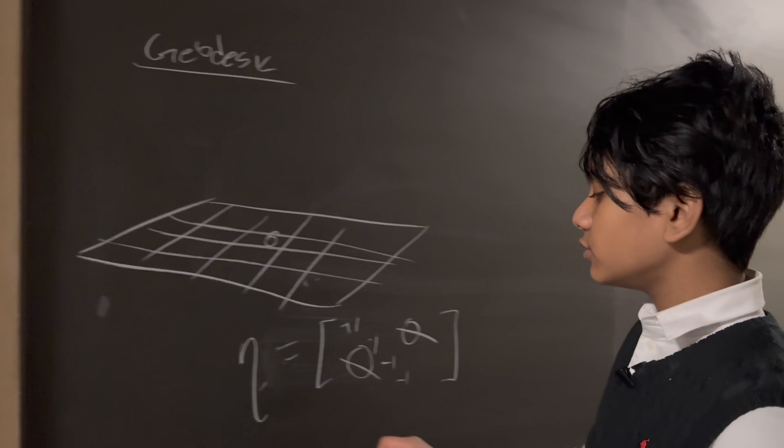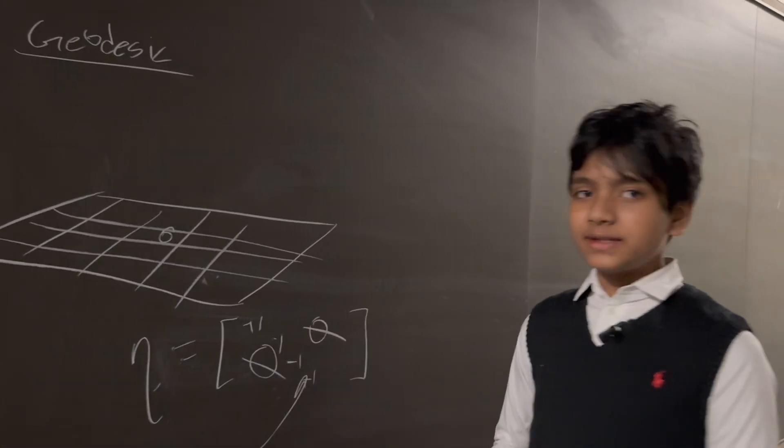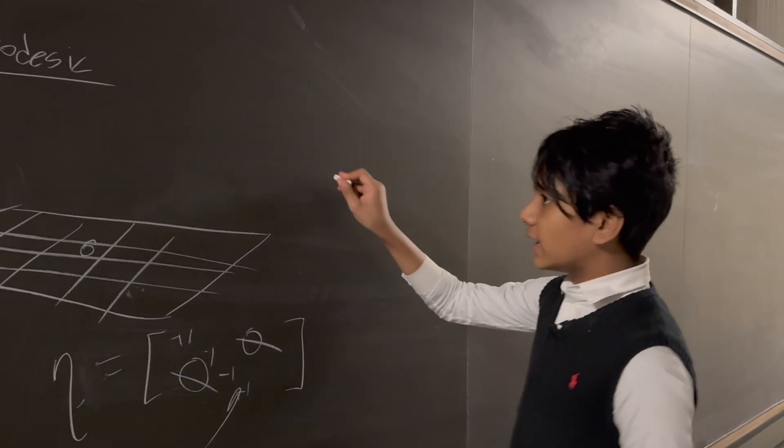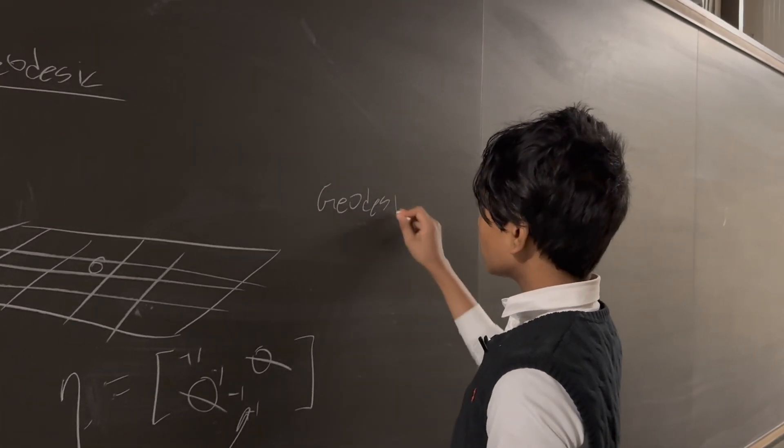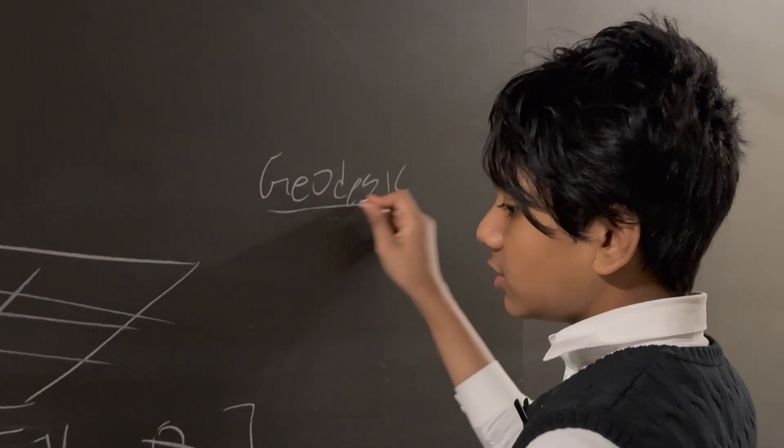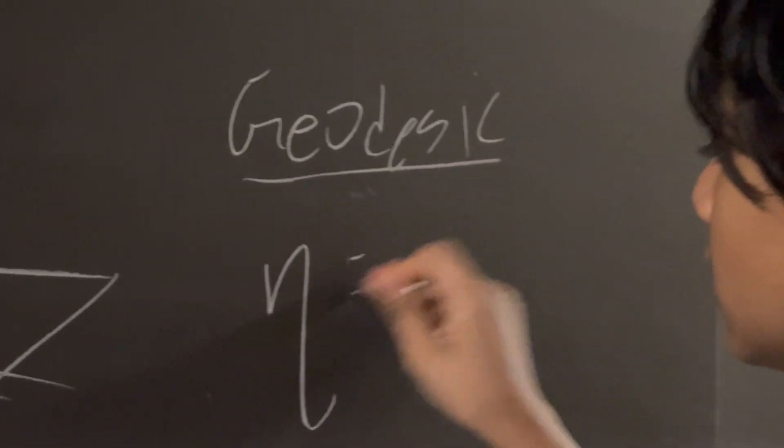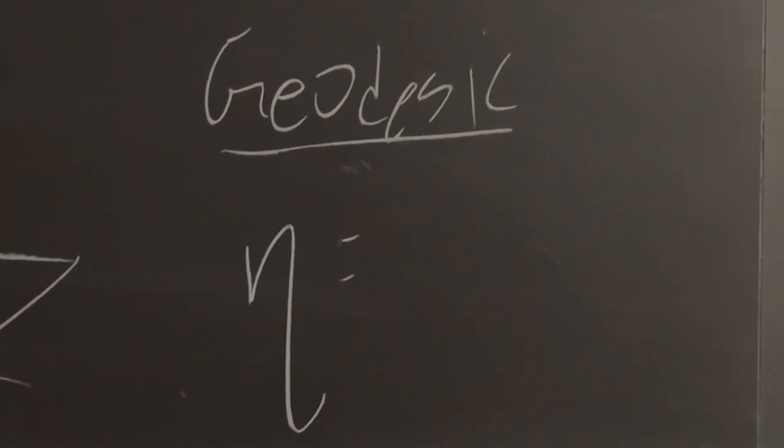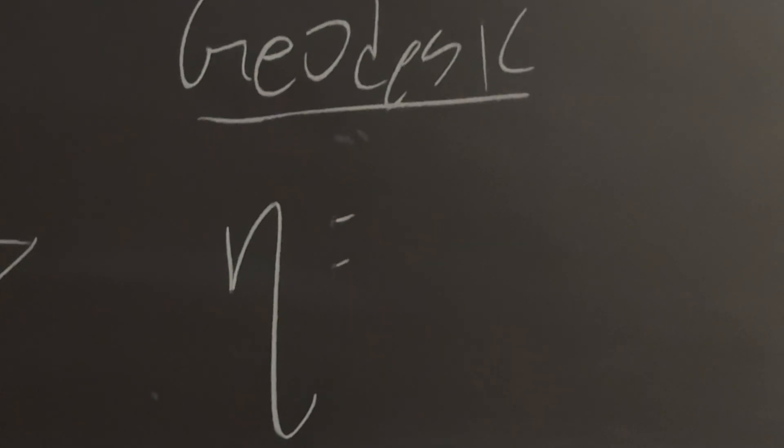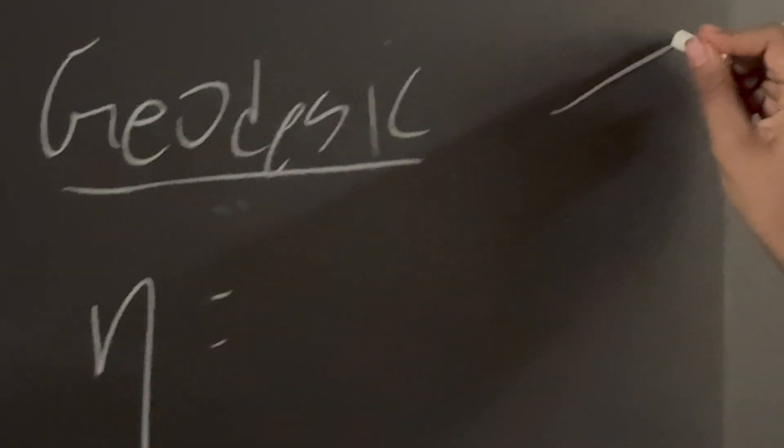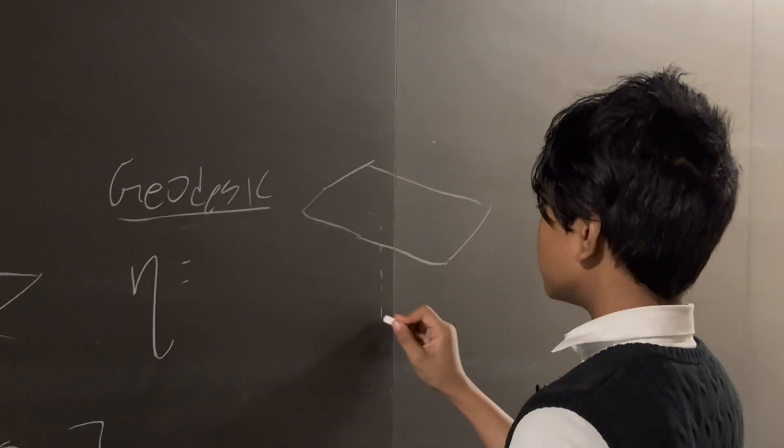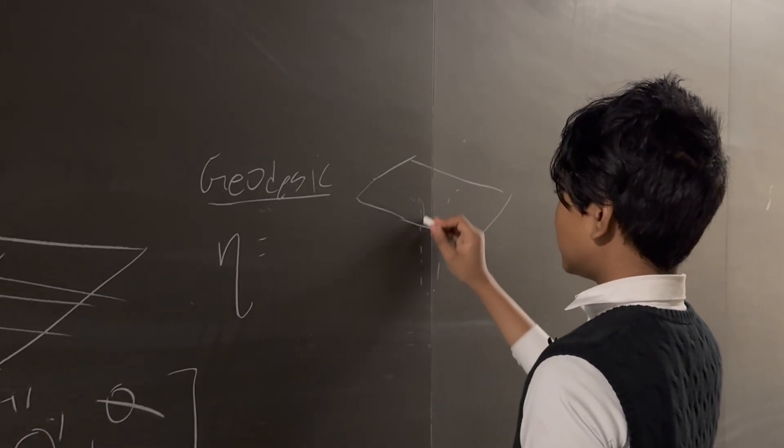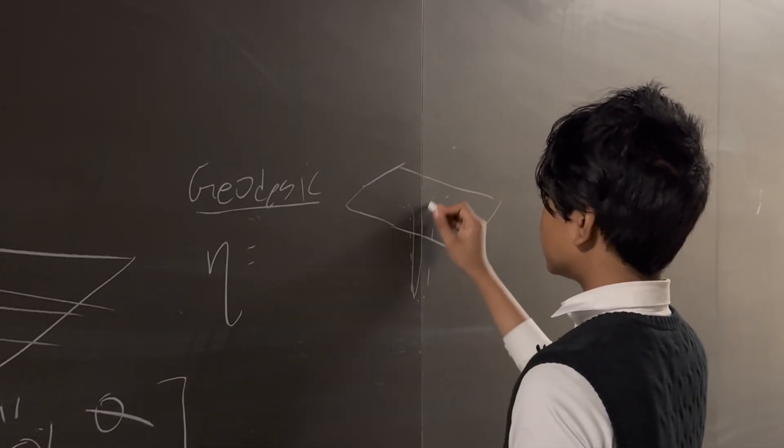So this is pretty simple. But the geodesic equation is what happens when you want to formulate a metric tensor that takes into account the curvature of spacetime. Because physics and geometry in general is completely different around a curved space than it is in Euclidean space.